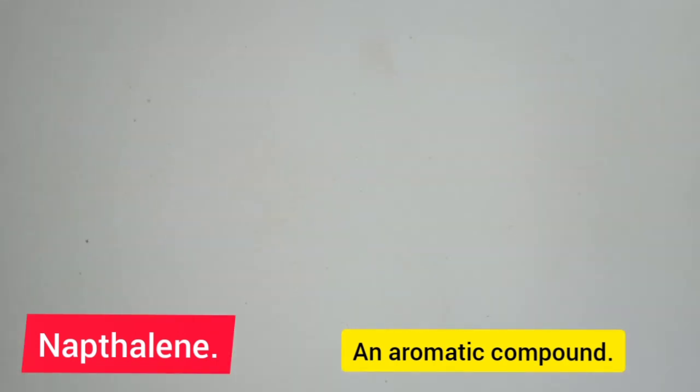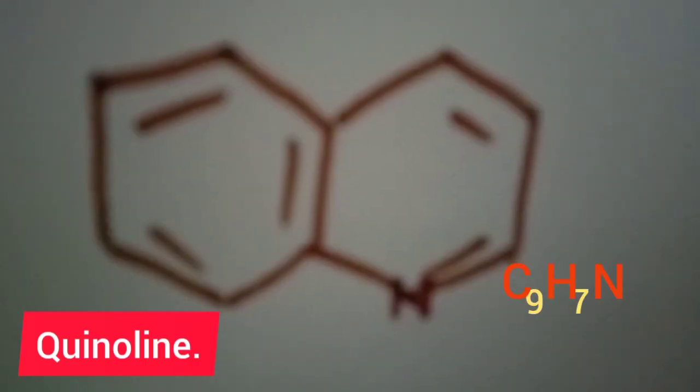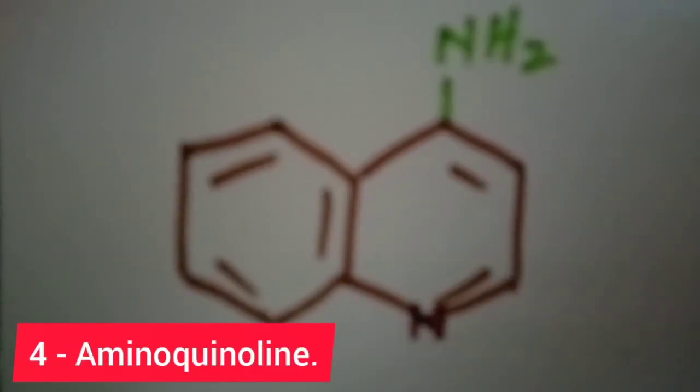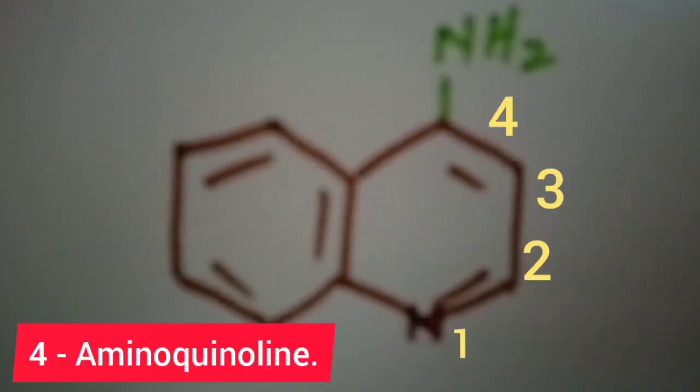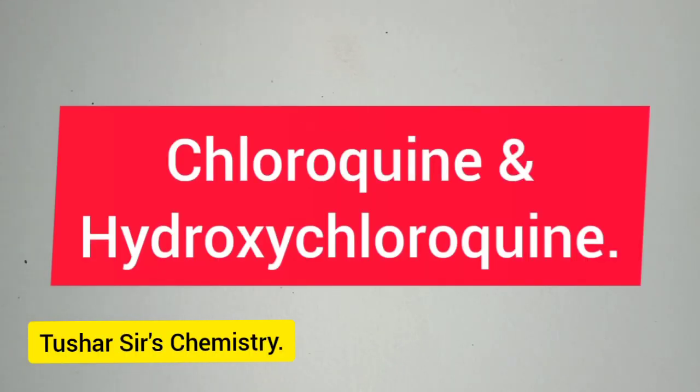See the structure I have drawn on the screen. Quinoline has nitrogen at one of the corners of the ring. This is four amino quinoline. You see there are two nitrogen atoms. The derivatives of four amino quinoline are chloroquine and hydroxychloroquine.